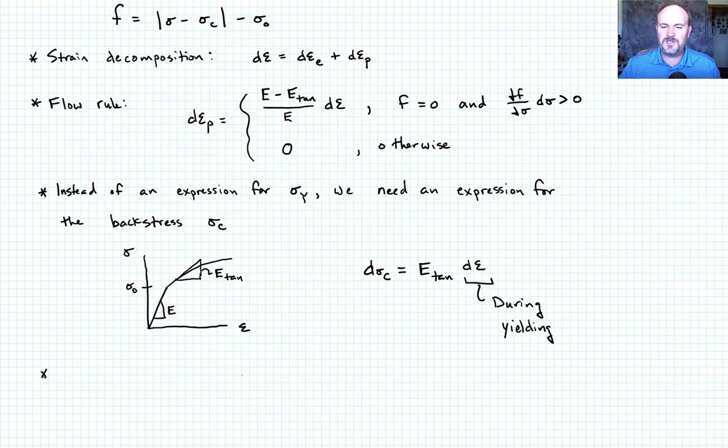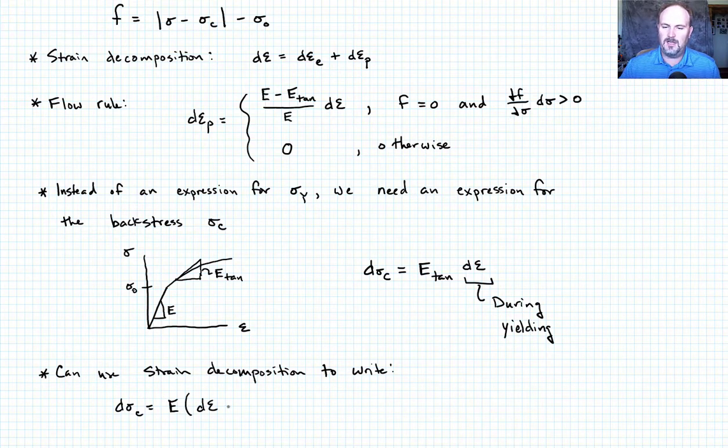We can also use the strain decomposition to write, just using Hooke's law, we could say that d sigma c must be then equal to e, the Young's modulus, times d epsilon minus d epsilon p. That's just this quantity represents the elastic strain increment.